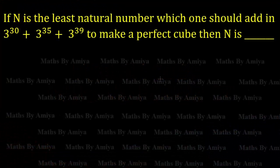Hello friends. Welcome to the world of Maths by MEA. There is a question in front of us: if n is the least natural number which one should add in the given expression 3 raised to 30 plus 3 raised to 35 plus 3 raised to 39 to make a perfect cube, then we need to find what is the value of n. We need to work on a perfect cube, so first understand the concept then apply it.